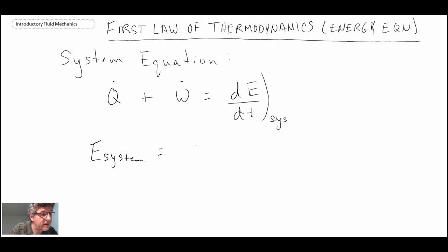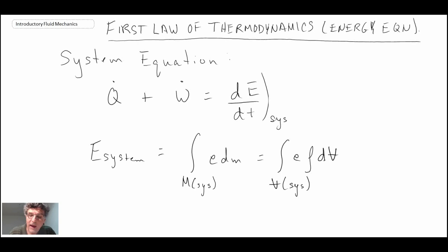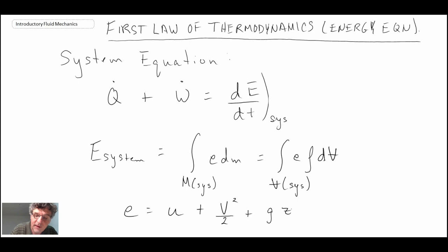We can write out the energy in the system, very much like we did earlier when we looked at continuity as well as momentum. In this equation, you'll notice we have little e — that is our intensive property for energy. That is represented by the internal energy plus the kinetic energy plus the potential energy that we would have in our fluid, and that is total energy per unit mass.